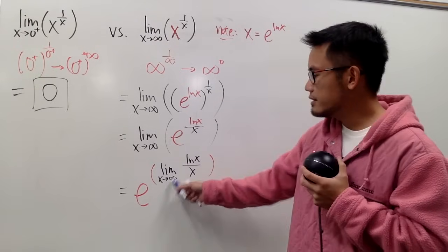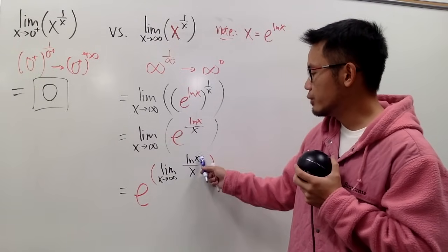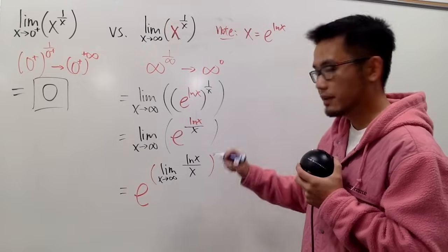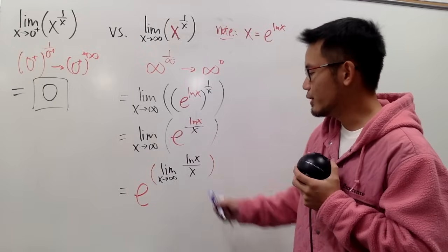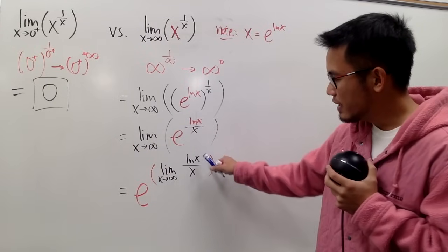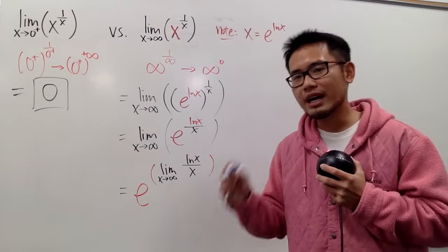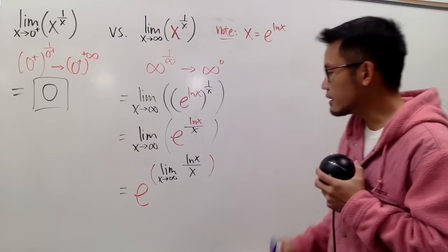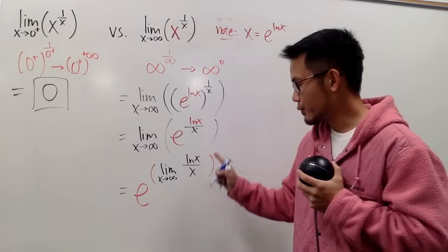Okay, in this situation, look at infinity into here, ln infinity is infinity. Infinity into here is also infinity. Infinity over infinity, that's also an indeterminate form, right? Therefore, we have to do more work. But this is not bad at all, because we can use L'Hôpital's rule, right?